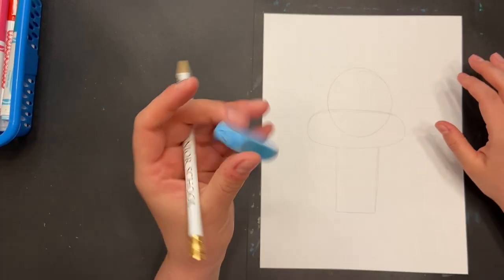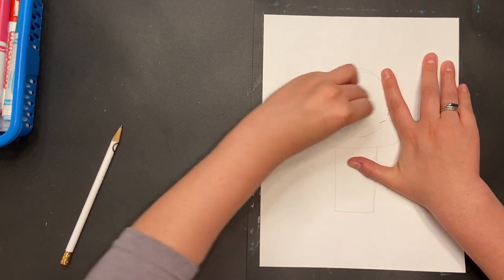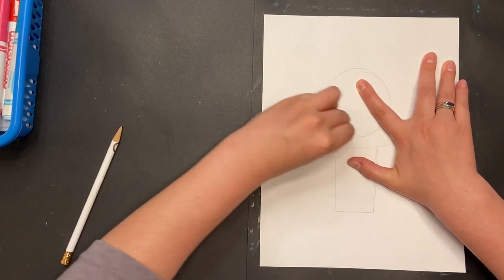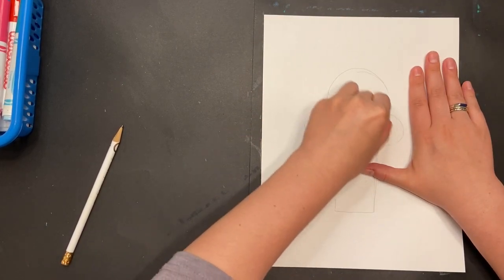So now that I have these shapes, I'm going to use my eraser to erase any of the lines inside those three shapes. It'll become one complete shape going around.